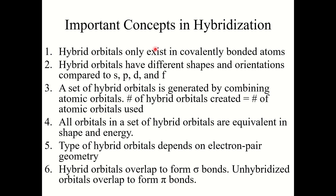There are a few important concepts in hybridization. First, hybrid orbitals only exist in covalently bonded atoms. They have different shapes compared to s, p, d, and f orbitals. A set of hybrid orbitals is generated by combining atomic orbitals, and the number of hybrid orbitals created equals the number of atomic orbitals used. All orbitals in a set are equivalent in shape and energy. The type depends on the electron pair geometry. Importantly, hybrid orbitals overlap to form sigma bonds, and unhybridized orbitals overlap to form pi bonds.